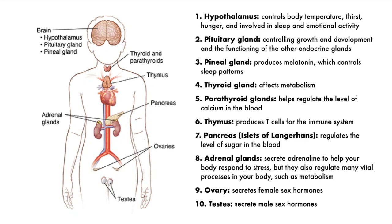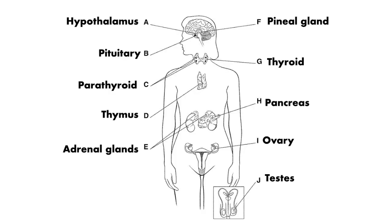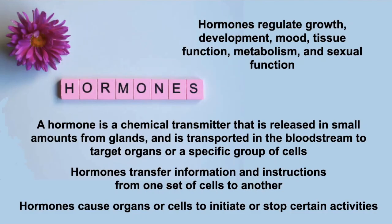As you can see on this page, there's a summary of the overall function of each of these glands. The first key term is a hormone. A hormone is a chemical transmitter that's released in small amounts by certain glands. This is then transported in the bloodstream, and it's going to target certain organs or specific groups of cells.